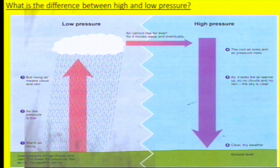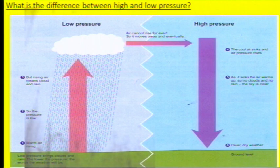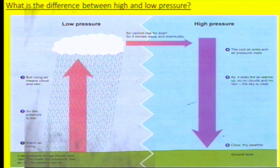In a high pressure system, we have the complete opposite. We have the air sinking, so we don't have any clouds forming, so the weather is generally quite bright and sunny and we have anti-cyclones.